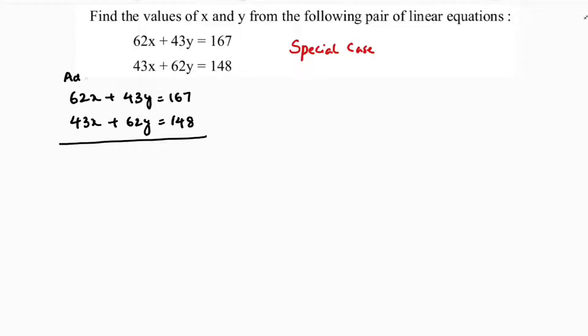One time I'll add them. One more time, see here: 62x plus 43y equals 167, and here 43x plus 62y equals 148. Here I will subtract.